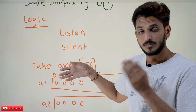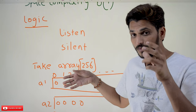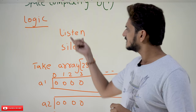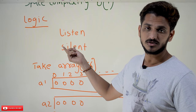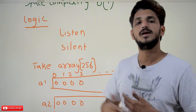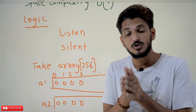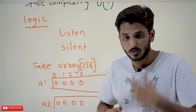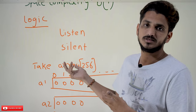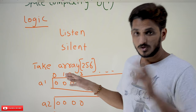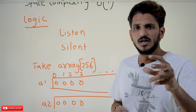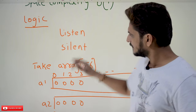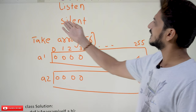But they asked you to maintain a time complexity of O(a+b), where A is the number of characters in string A and B in string B. To achieve this, there is an important technique. You have to understand this technique — you can use it in many other examples also. So let's look at what the technique is.